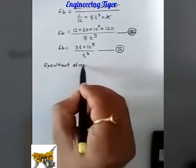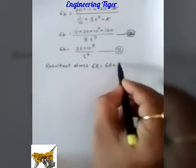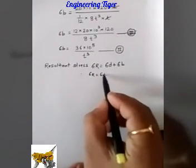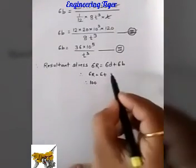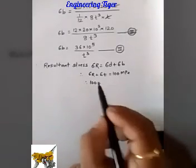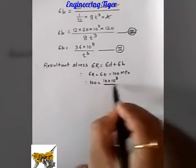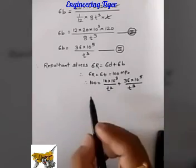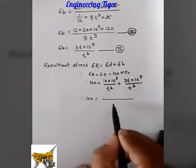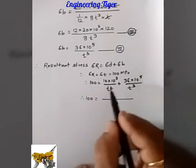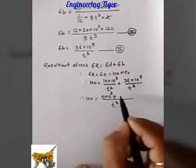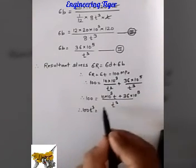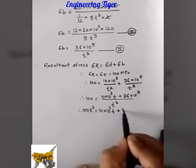Now we calculate the resultant stress. Resultant stress σR equals σD plus σB. Since σR equals σT equals 100 MPa, we have: 100 equals 10×10³ upon T² plus 36×10⁵ upon T³. Taking LCM as T³, this becomes: 100T³ equals 10×10³ × T plus 36×10⁵.